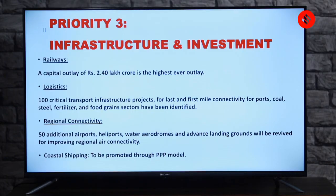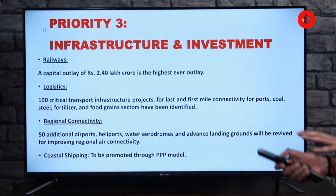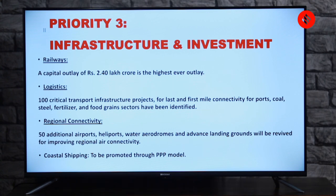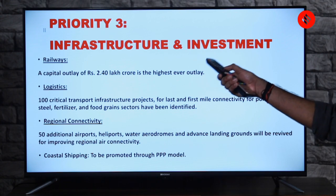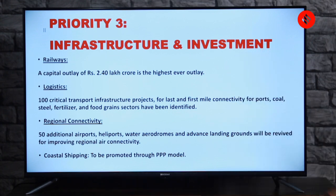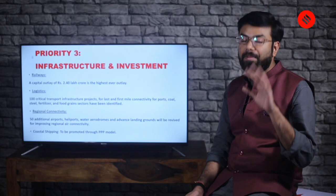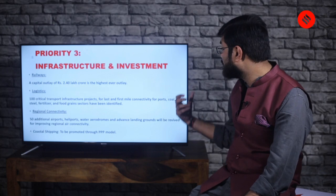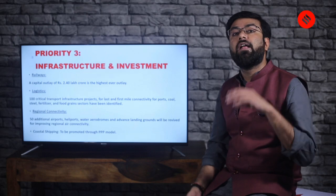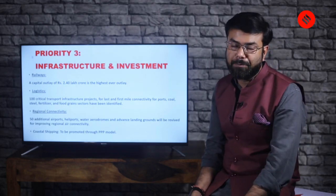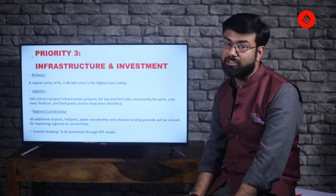Regarding railways — the third statement in the MCQ — a capital outlay of rupees 2.40 lakh crore is the highest ever given to railways. For logistics, 100 critical transport infrastructure projects for the last and first mile connectivity of ports, coal, steel, fertilizers, and food grain sectors have been identified. Resources like coal, steel, and fertilizers are present in our country, but one of the key problems is their transportation — hence these 100 critical transport infrastructure projects.